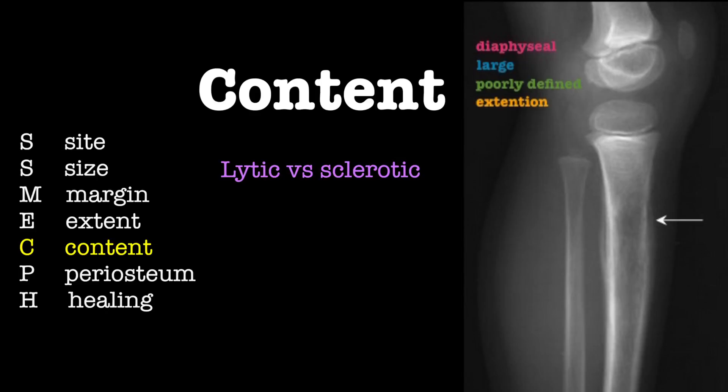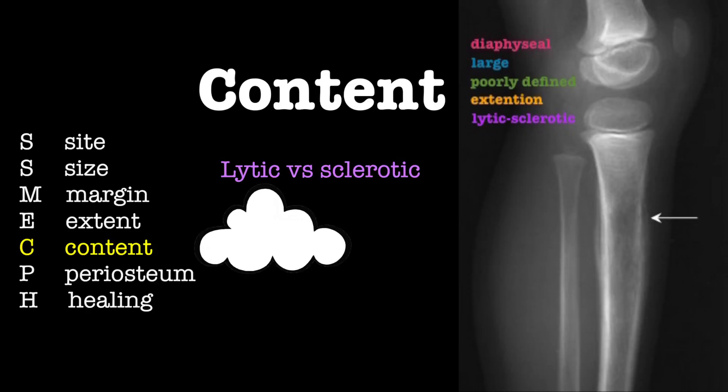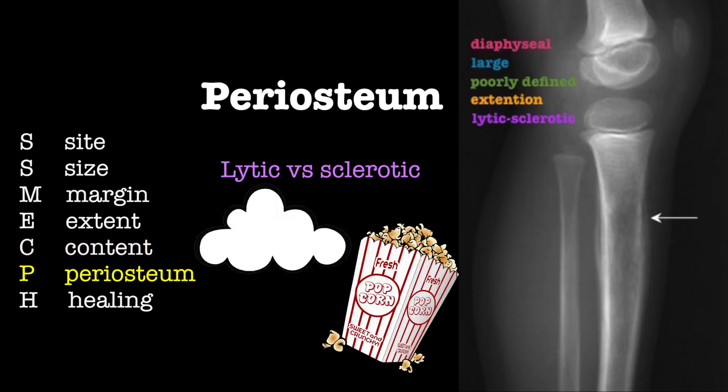This lesion has both a lytic and sclerotic appearance. Also look for a cloudy appearance of an osteoid matrix, seen in osteosarcoma, and a popcorn appearance of a chondroid matrix, seen in chondrosarcoma.